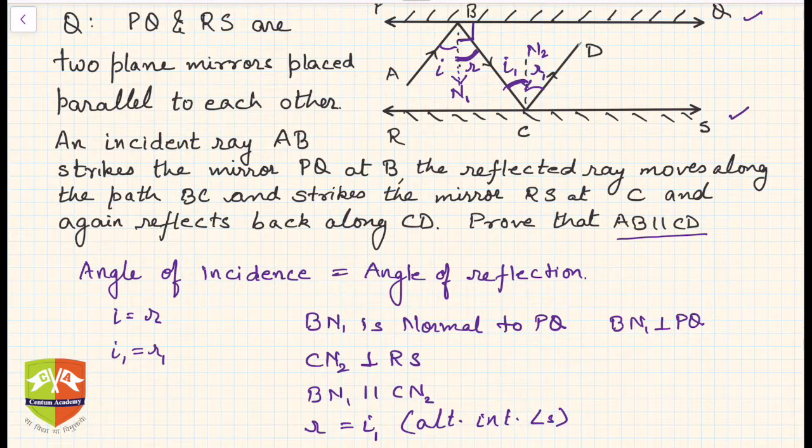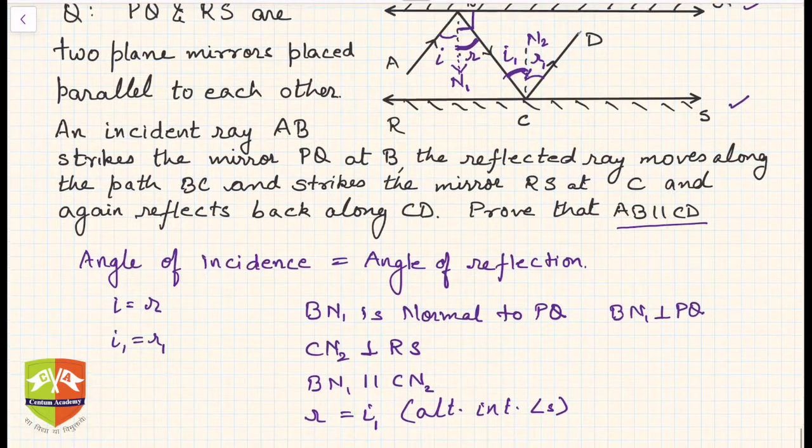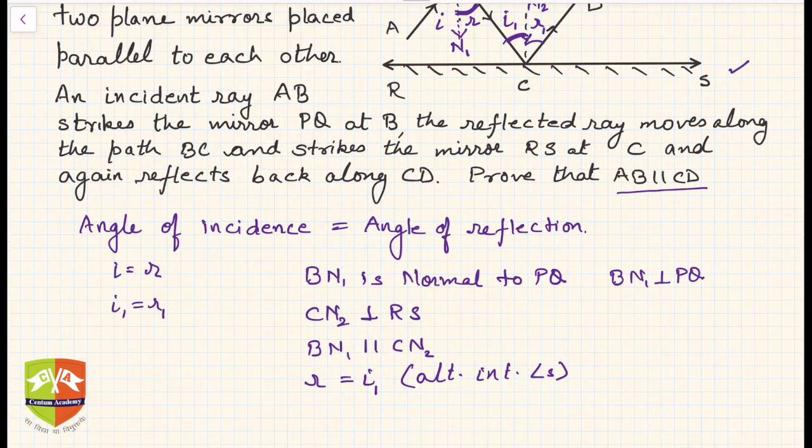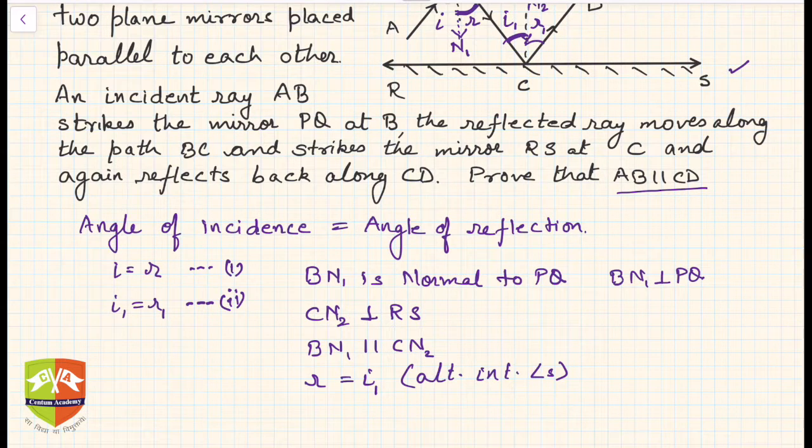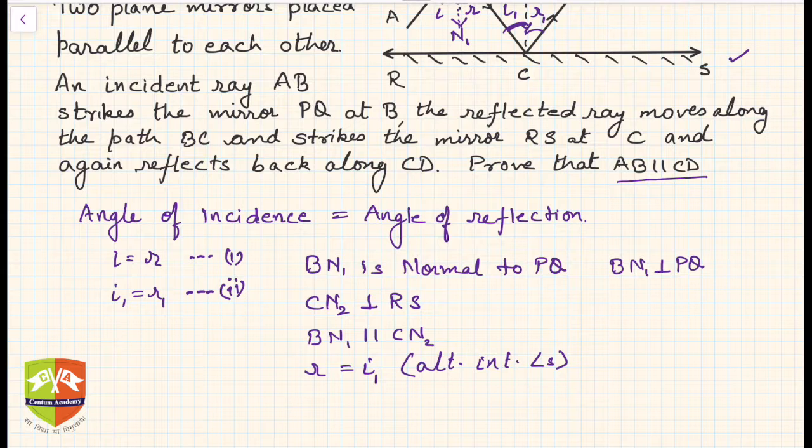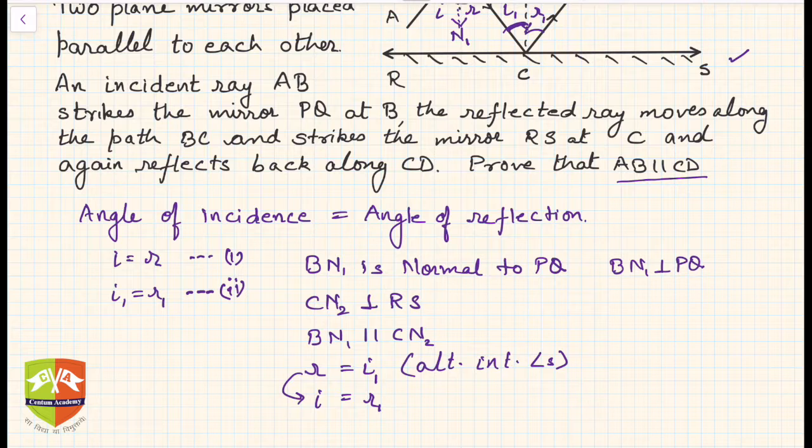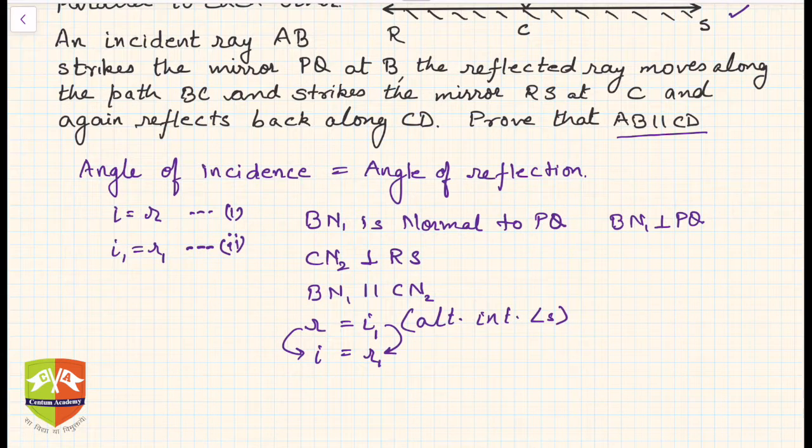This is because of alternate interior angles. So r is equal to i1. And we know from equations 1 and 2, i is equal to r and i1 is equal to r1. So if you replace r by i and i1 by r1, both will be same because r equals i and i1 equals r1. This is also true.